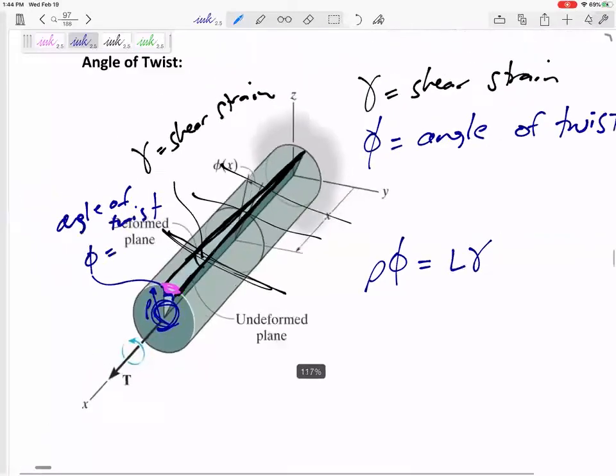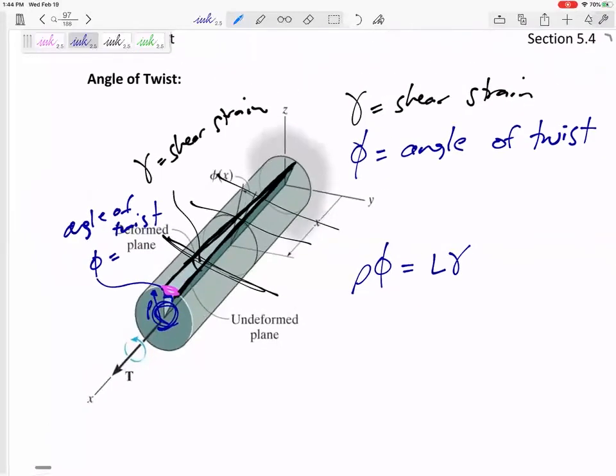So let's think about rho phi is equal to L gamma. Phi is angle of twist. Gamma is shear strain.